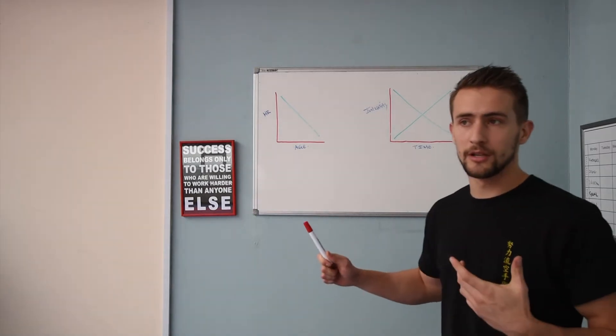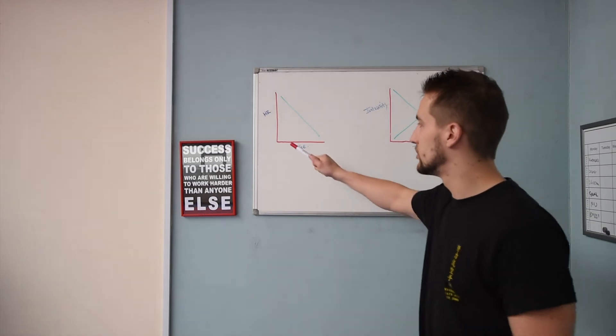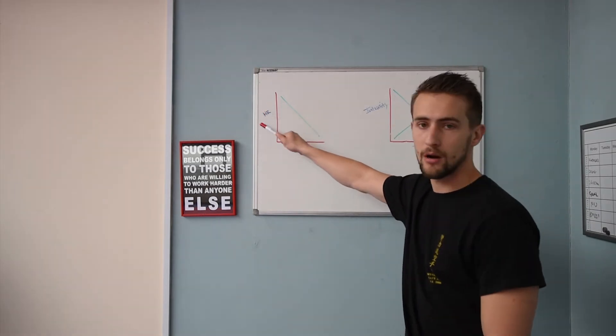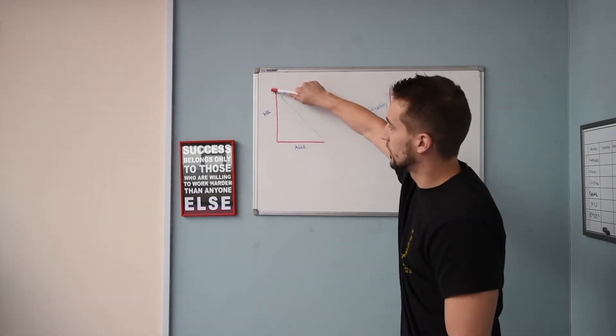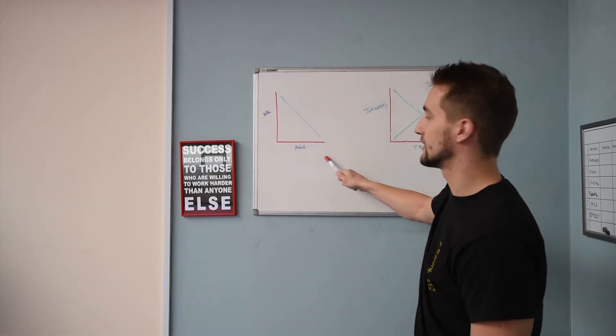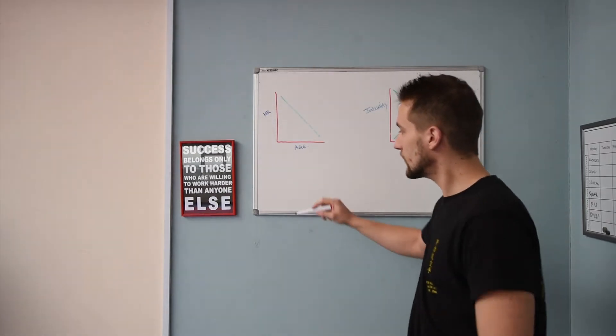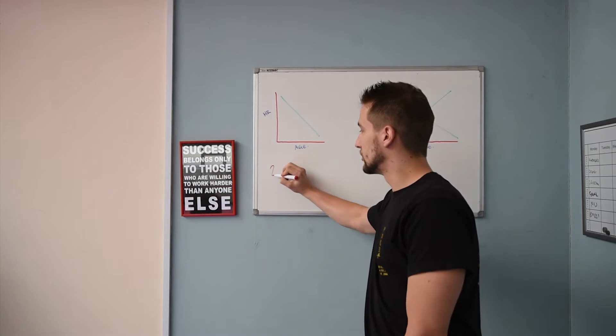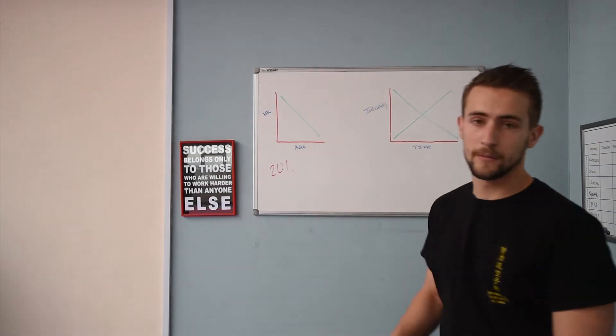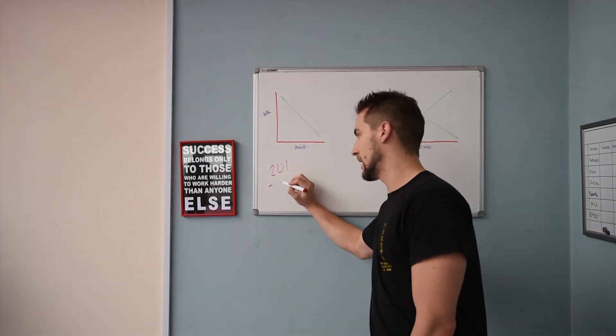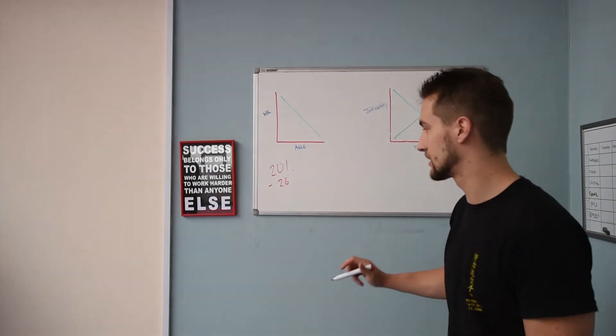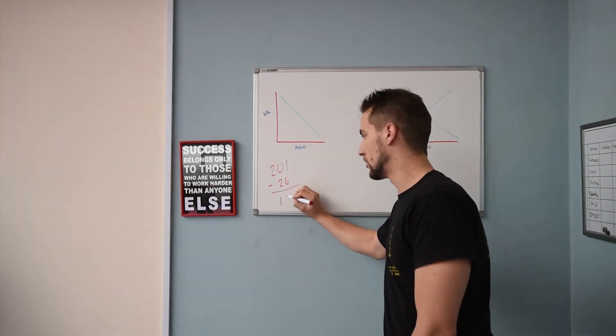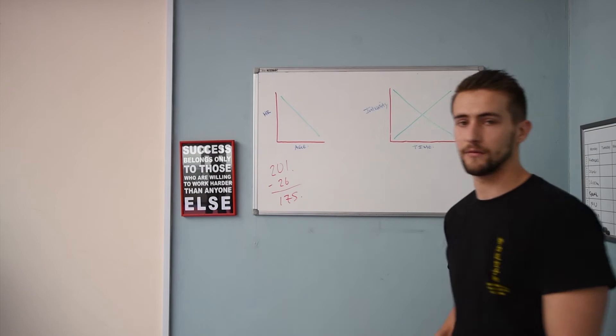So the first thing I need you to do is find out your maximum heart rate. On my chart here, this one's going to be your heart rate, this one is actually your age. So I need you to do 201 minus your age. I'm going to do minus 26, which takes me to 175, like that.